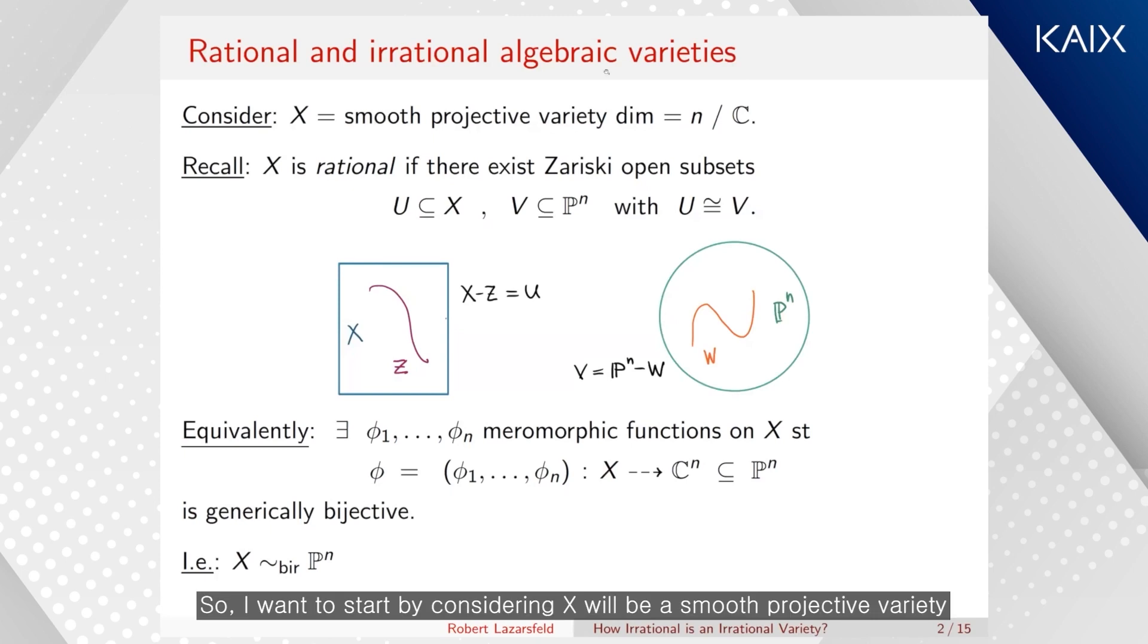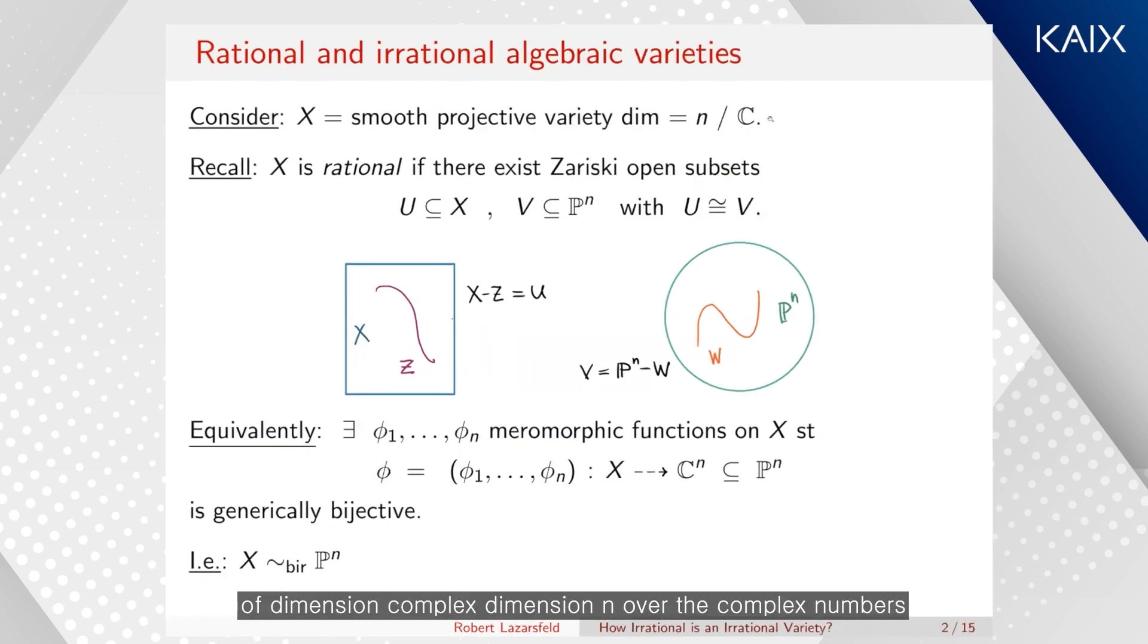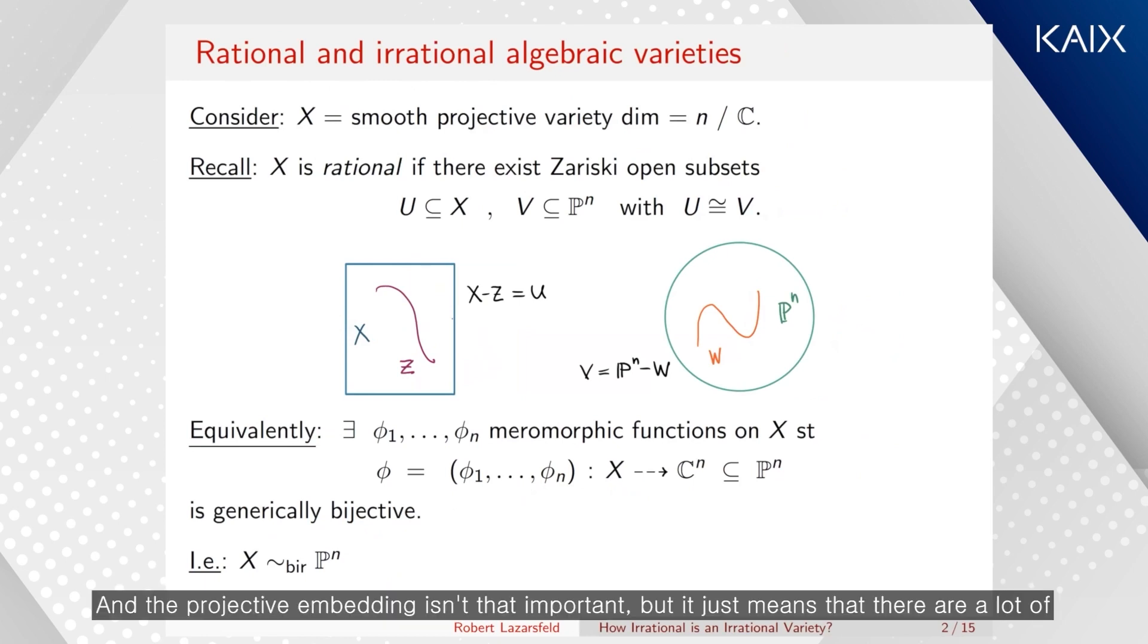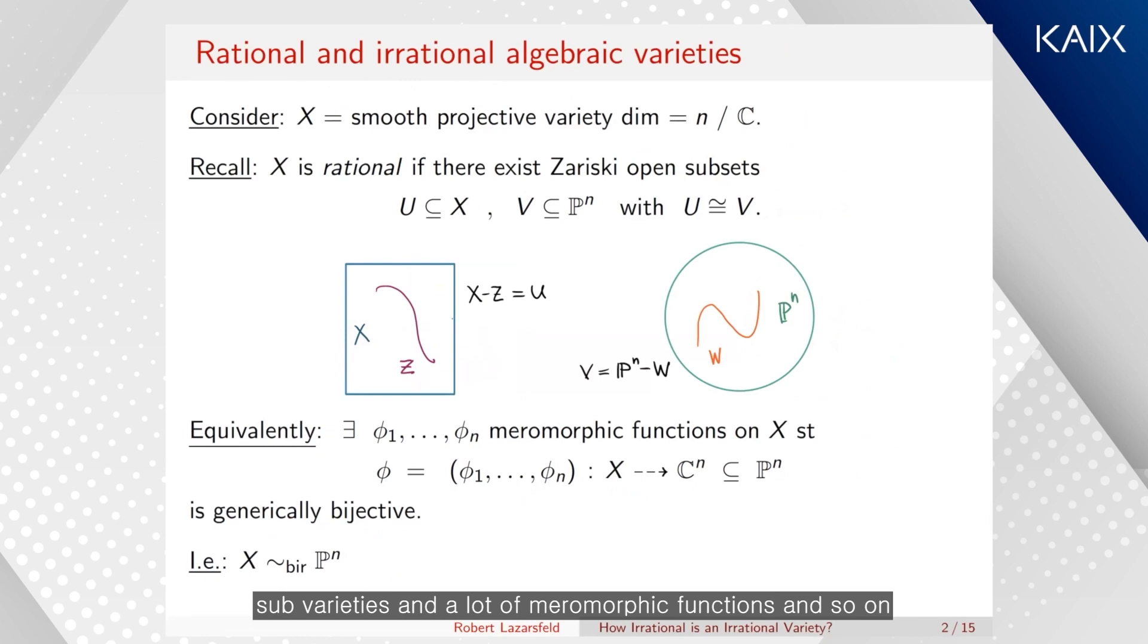So I want to start by considering X will be a smooth projective variety of dimension, complex dimension n over the complex numbers. You can think of that as just a compact complex manifold that happens to embed in projective space. And the projective embedding isn't that important, but it just means that there are a lot of subvarieties and a lot of meromorphic functions.